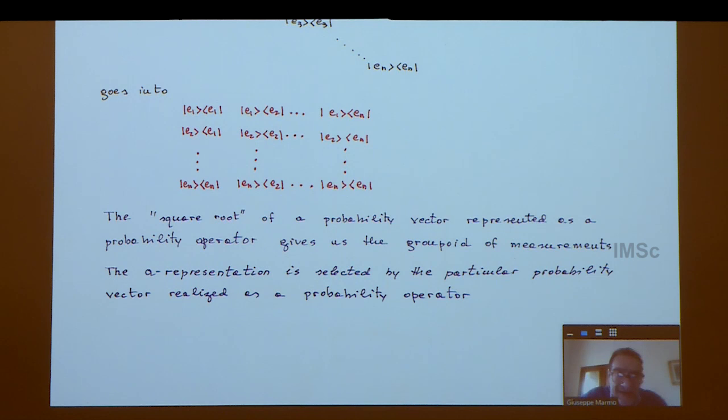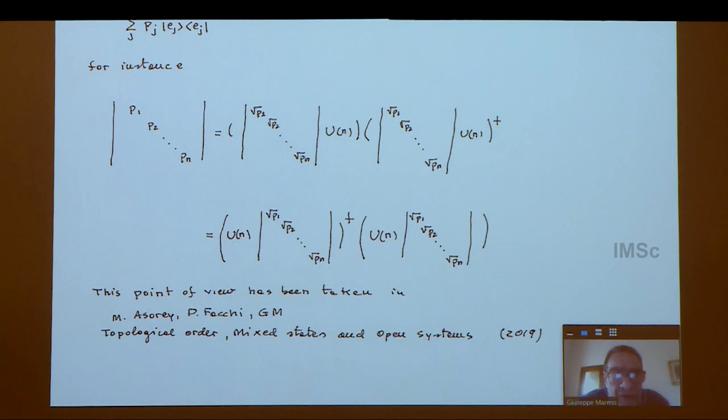The square root of the diagonal matrix in terms of operators gives you exactly the groupoid. Again, the groupoid naturally represents the square root of the quantum representation of a classical probability operator. Next, please. There are other ways to consider the square root to go from probabilities to probability amplitude.